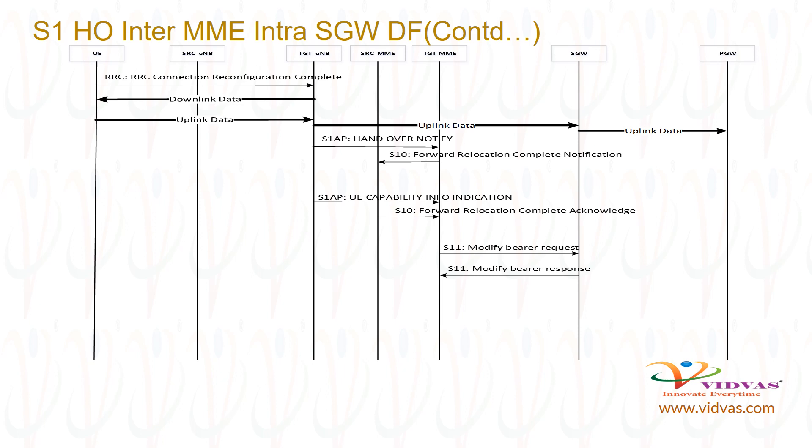Target ENB sends S1AP handover notify to target MME. Target MME sends S10 forward relocation complete notification to source MME. Target ENB sends S1AP UE capability info indication to target MME. Source MME sends S10 forward relocation complete acknowledge to target MME.